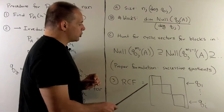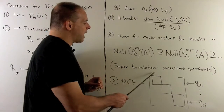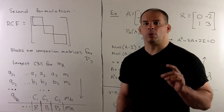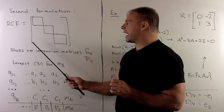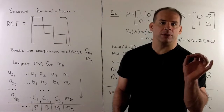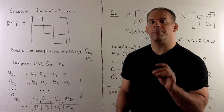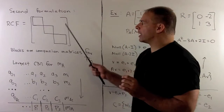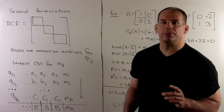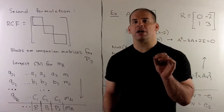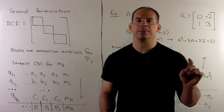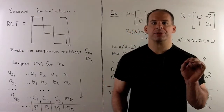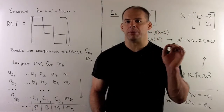This matrix is block diagonal, where each diagonal block corresponds to the block we set up for each q_j. For the second formulation, we still have a block diagonal matrix and the blocks are still companion matrices, but we're not going to sort by irreducible factor. If we arrange our blocks in decreasing order by size, the largest block is a companion matrix for the minimal polynomial of A. For the other companion matrices, we'll have a sequence of polynomials p_j.